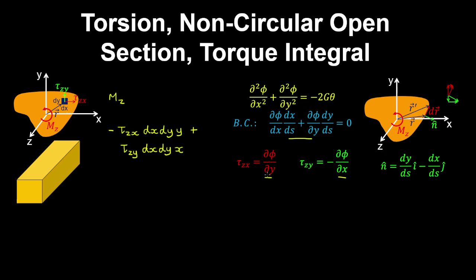Now we can substitute for the stresses using the stress functions. We have minus dphi/dy being tau_zx, multiplied by y, dx dy. And then minus dphi/dx, multiplied by x, dx dy. Integrating these over the area gives the torque acting on the section.